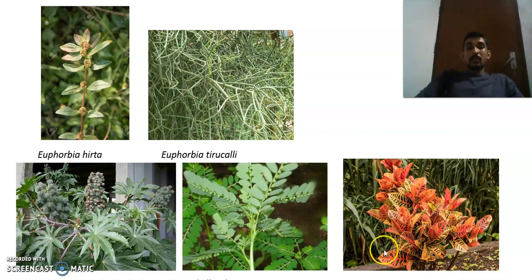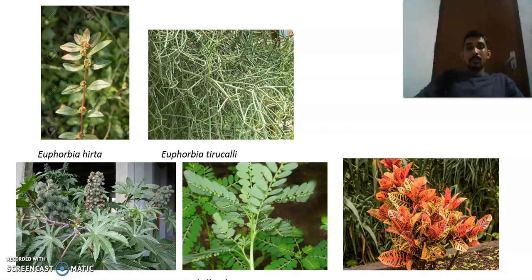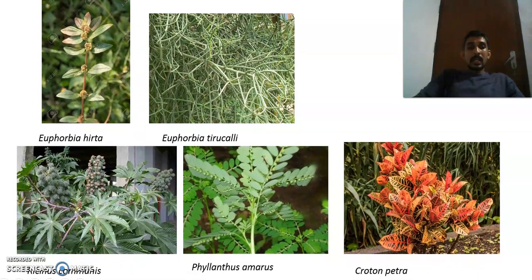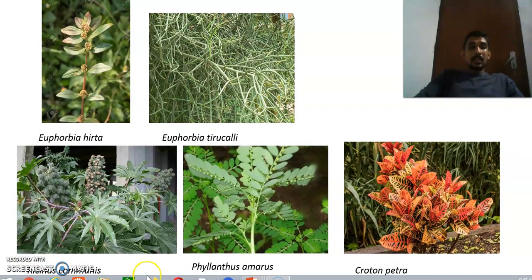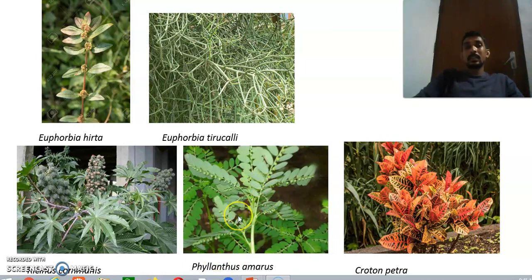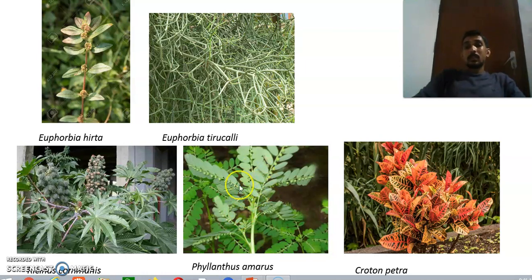The third example is the Croton plant, Croton petra. This one is called Phyllanthus amarus. In Malayalam we call it 'kizhar nelli,' and it is commonly used for treating jaundice — 'manja pittam' in Malayalam.